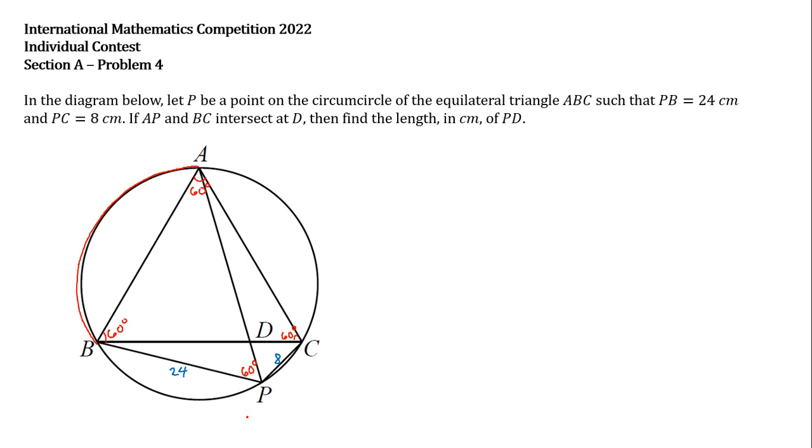Similarly, angle ABC and angle APC intercept the same arc AC. So if angle ABC is 60 degrees, angle APC must also be 60 degrees.